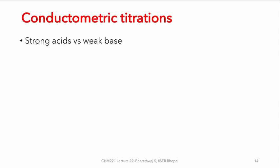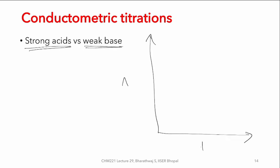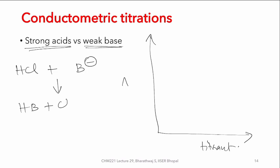The next example is the titration of a strong acid as a function of a weak base — similarly plotting λ as a function of titrant concentration. Starting with HCl and neutralizing with a weak base B⁻, you form HB⁺ + Cl⁻. This results in the same reduction in conductance as seen for the strong acid and strong base case.